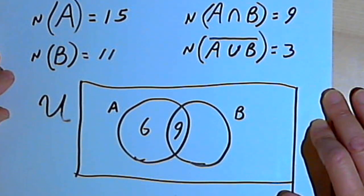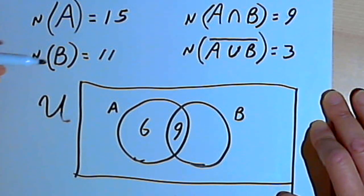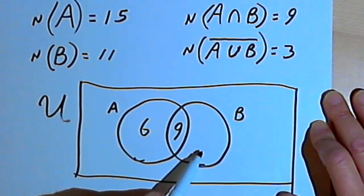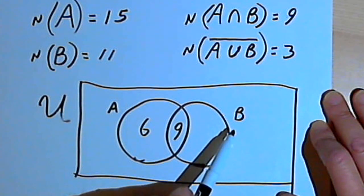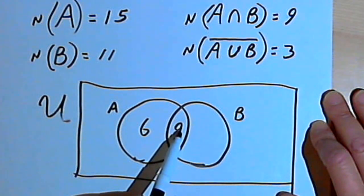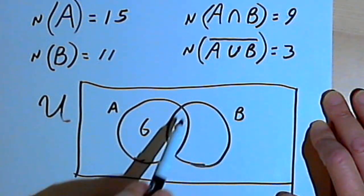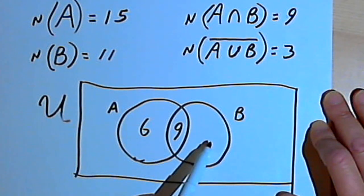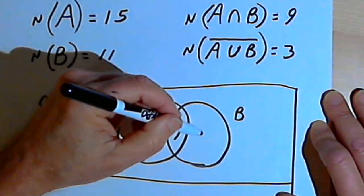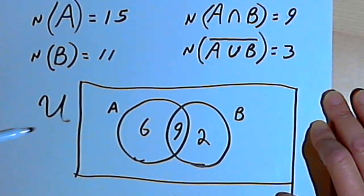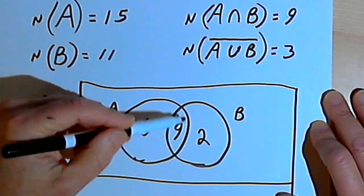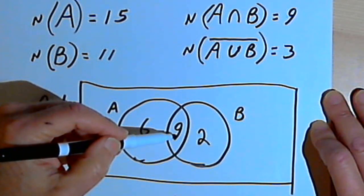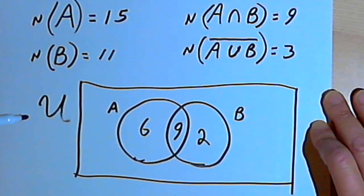So the second question, how many students are taking only biology, is going to have an answer we derived the same way. There are 9 students in the overlap, and there are a total of 11 students who are taking biology. So that means that there are 2 students who are taking biology who are not in that overlapped area. So 2 students are taking only biology.